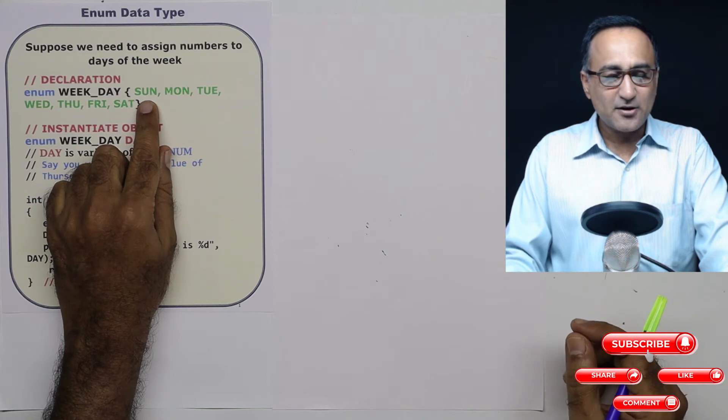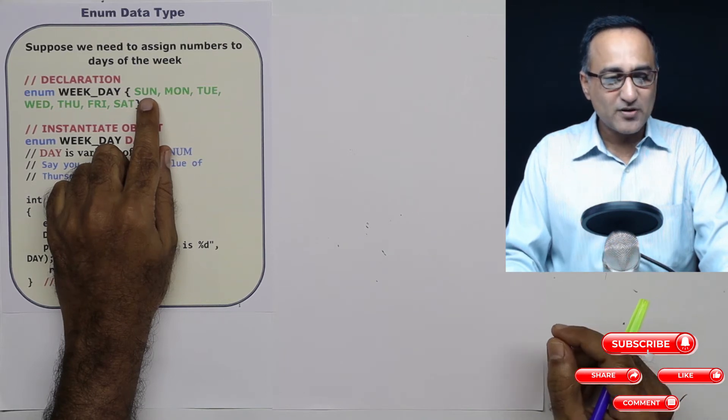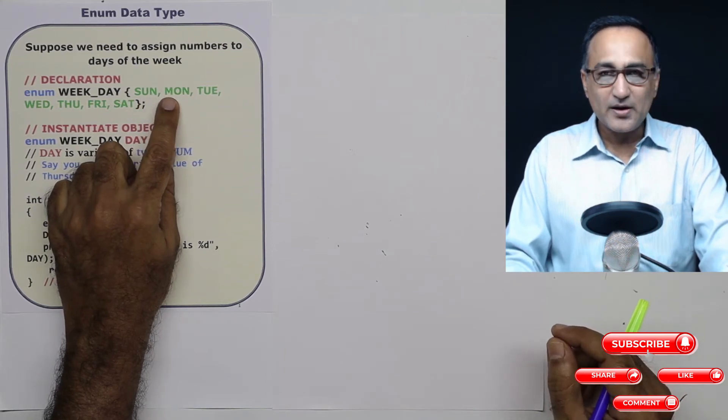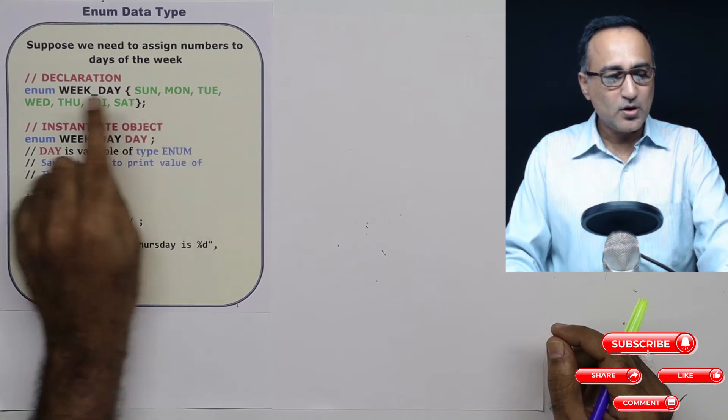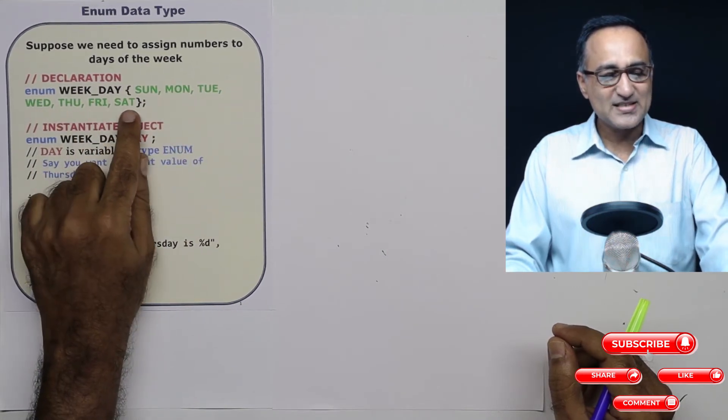So what happens here is internally, the state of Sunday will have the value zero, this will have the value integer one, two, three, four, five and six.